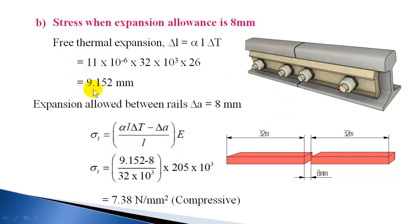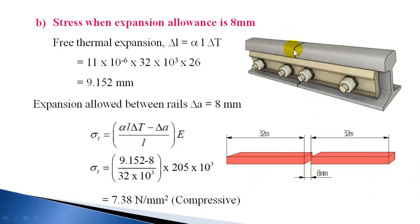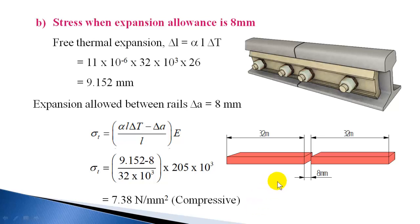The stress induced is 7.38 N/mm² compressive, because heating can only induce compressive stress. Comparing the two cases: without the gap, stress was 58.63 N/mm²; with the 8 mm expansion allowance, stress is only 7.38 N/mm². This shows a large reduction in stress due to the initial gap provided — demonstrating the importance of expansion allowances in rails so buckling does not occur.